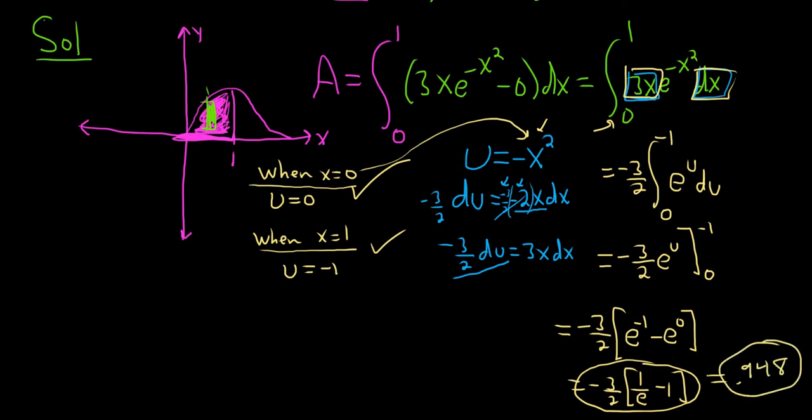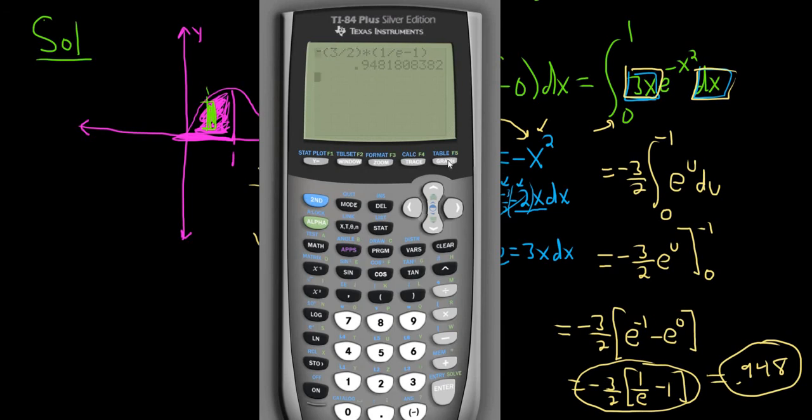I'm going to show you another way to do this. This is even better. Watch this. If you go back to graph, and you hit this blue key here called calc. So hit second calc. And then go down to the number 7. And then press enter one time.